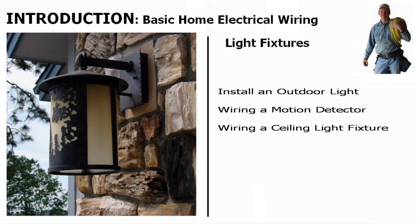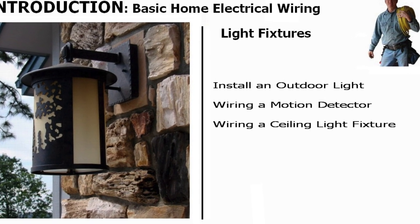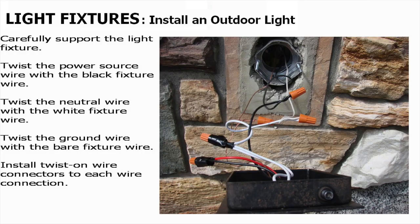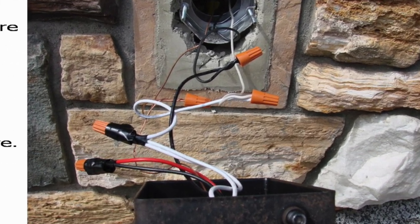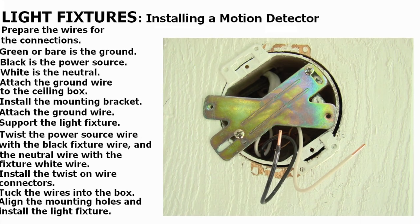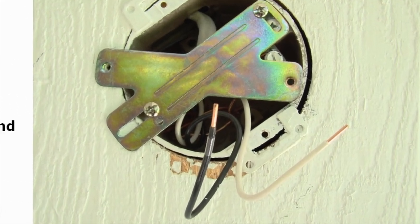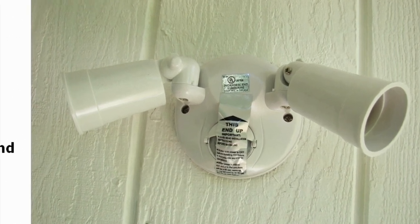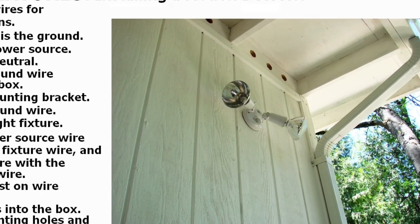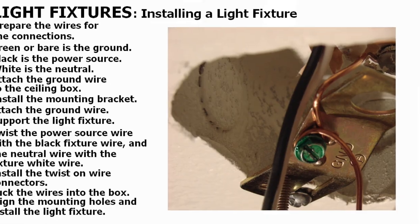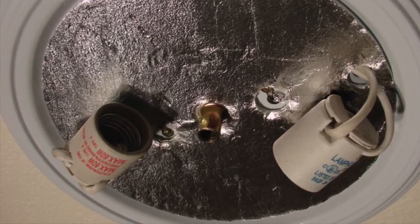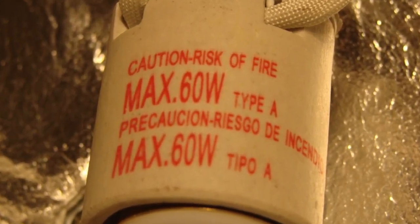Then we get into light fixtures: installing an outdoor light fixture, a motion detector, and a ceiling light fixture — how those are prepared, installed, and how the wiring connections are made for all three scenarios. We show how a motion detector is installed, how to adjust the configurations for the motion detector sensors, and how it all works. We also cover the ceiling light fixture and the safety of installing the right type of bulb in the fixture housing.